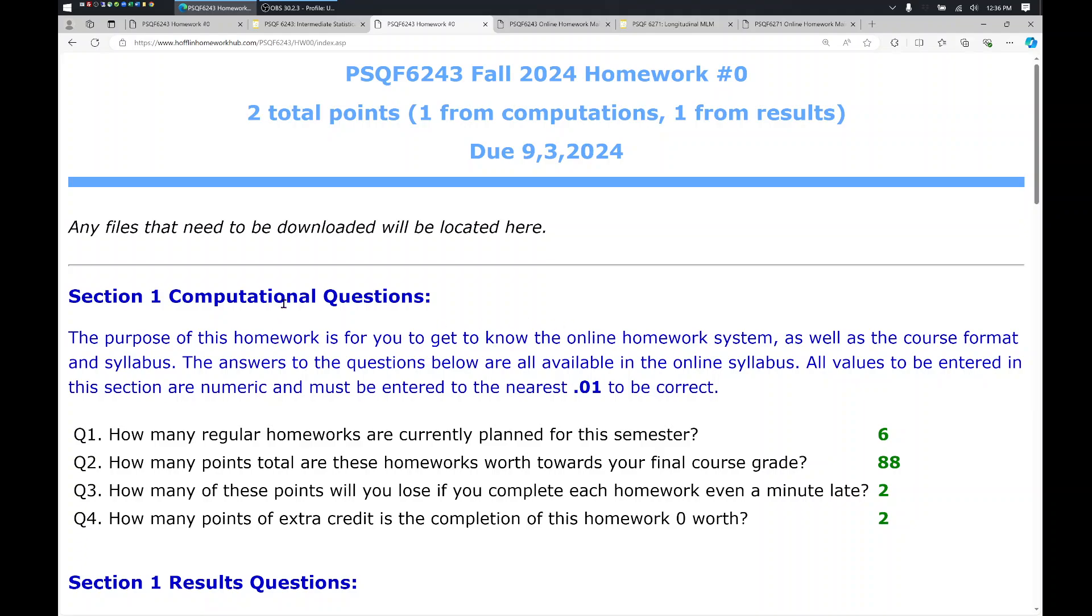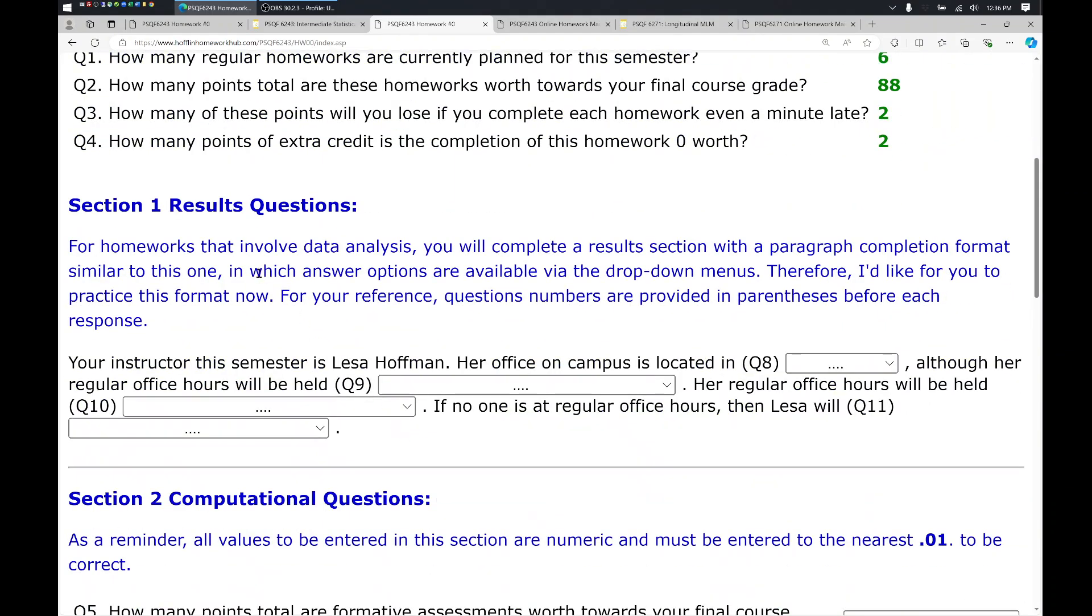So that's the first kind of question, computational. The second kind of question is a results question. And these are usually interpretations of the values that have been given up above. In this case, however, I'm going to answer some more questions about the syllabus.